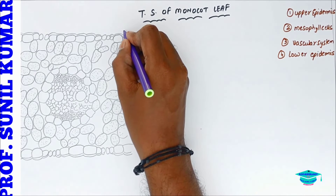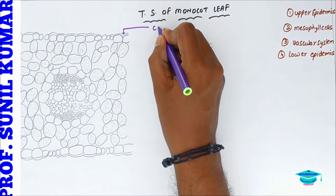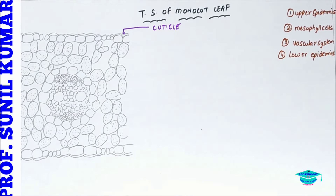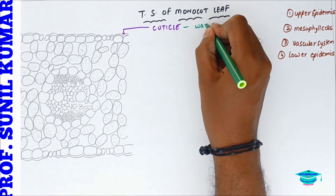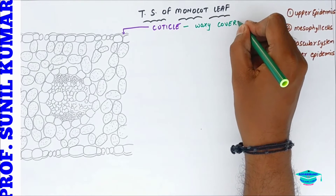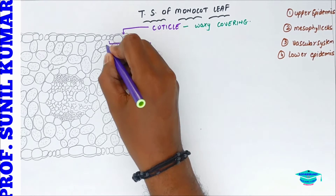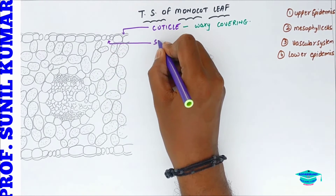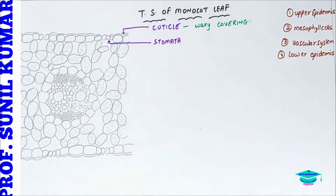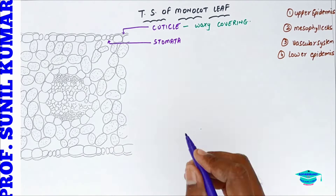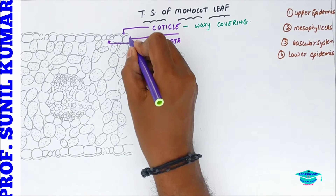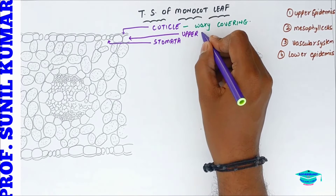The Monocot leaf has the outermost covering called the cuticle. The cuticle is basically a waxy coat that protects the leaf from transpiration. Below this, on the upper epidermis, we will find stomata. In the case of Monocot leaf, stomata are present on both surfaces of the leaf.